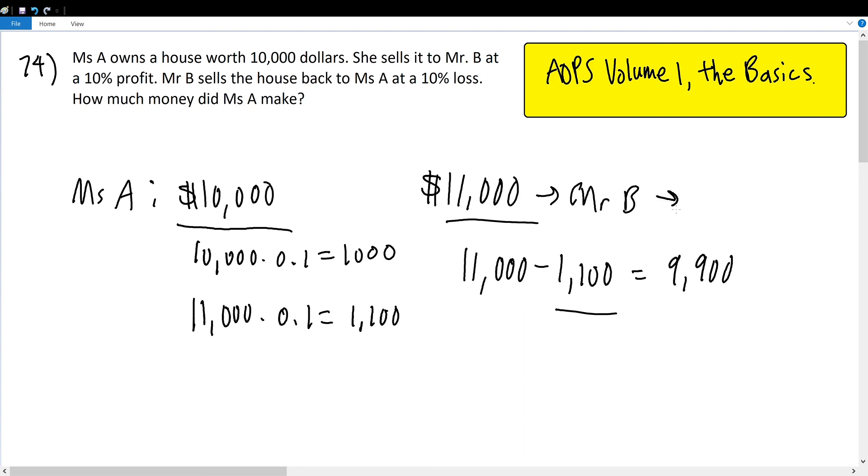Mr. B sold the house to Miss A at $9,900.